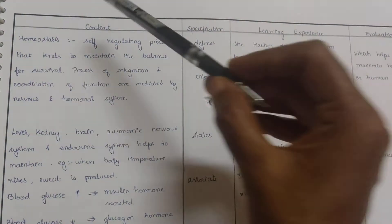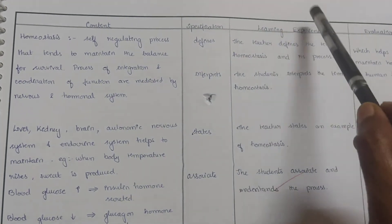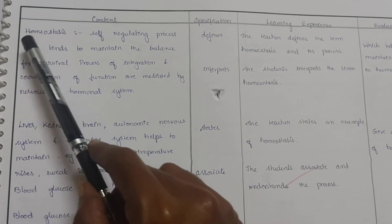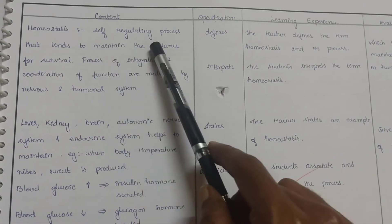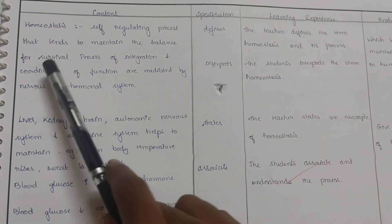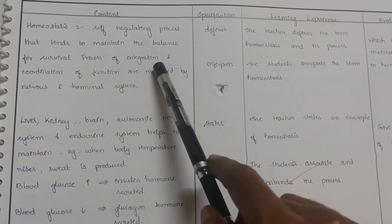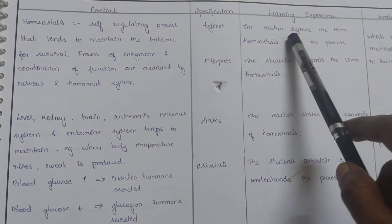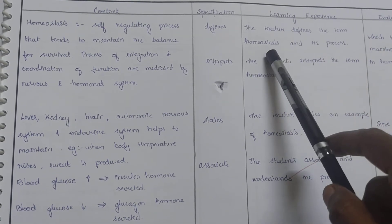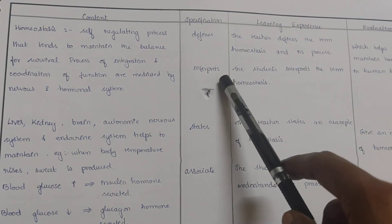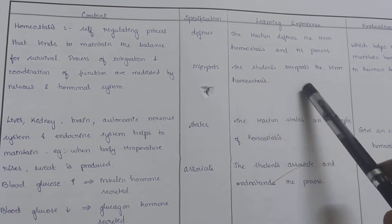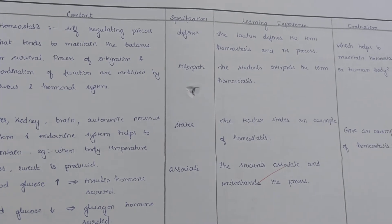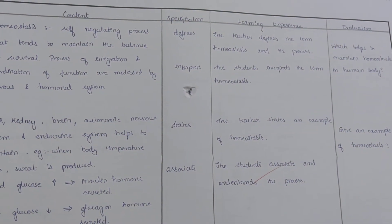Now we have to write here a declaration of the topic human body process. We start the content by defining homeostasis. It is a self-regulating process that tends to maintain the balance for survival. Process of integration and coordination of function are mediated by nervous and hormonal system. The teacher defines the term homeostasis and its process. The student interprets the term homeostasis which helps to maintain homeostasis in human body.